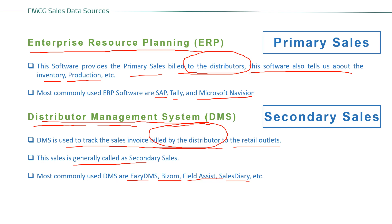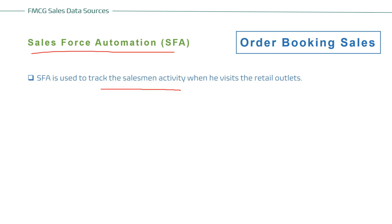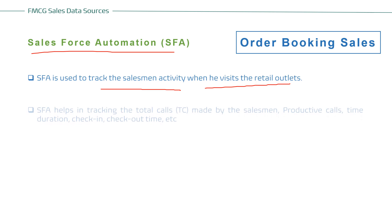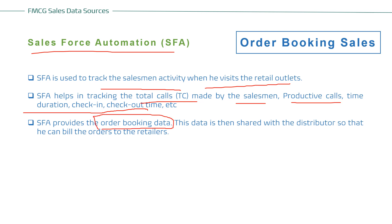Salesforce Automation (SFA) is used to track the salesman's activity when he visits retail outlets. It helps track total calls made, productive calls, time duration, check-in/checkout time, and provides order booking data. For example, a salesman visits 40 outlets in a day, gets orders from 15 outlets at an average value of ₹5,000 per outlet — giving an order value of ₹75,000 for that day, captured through this software.